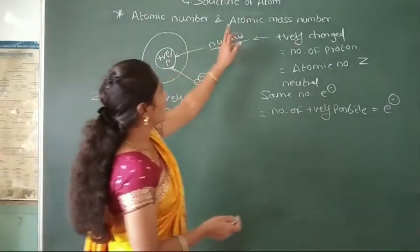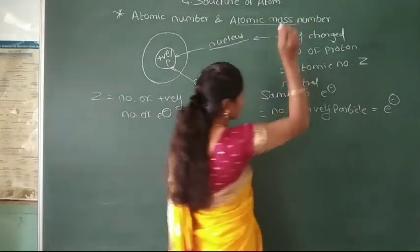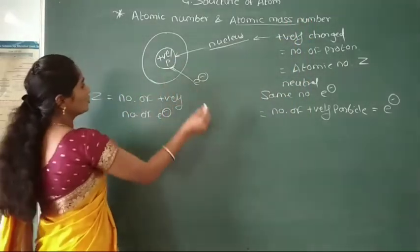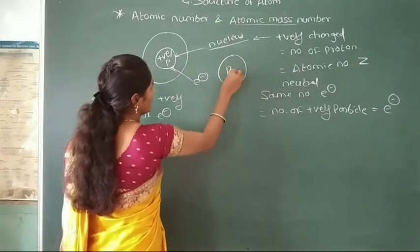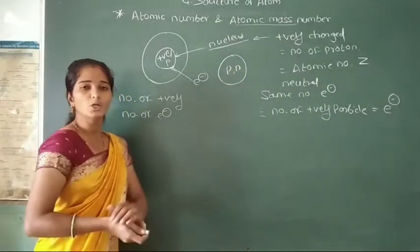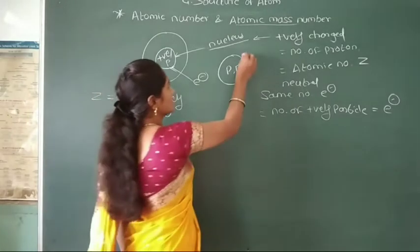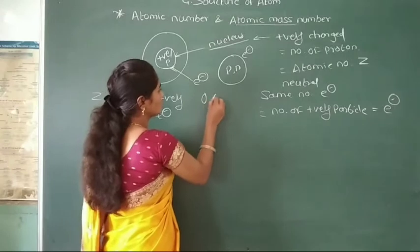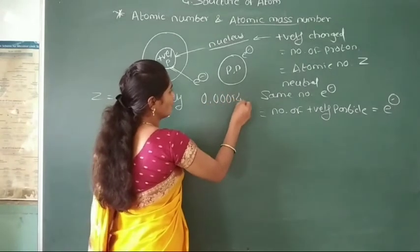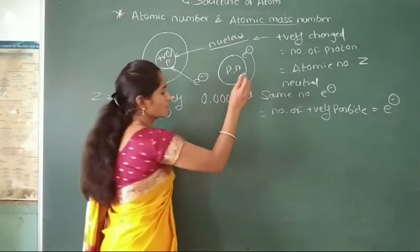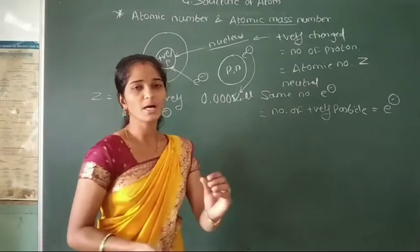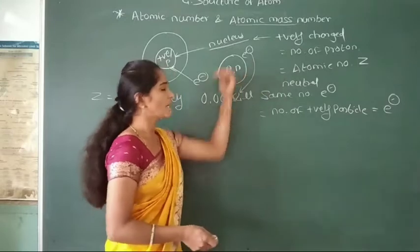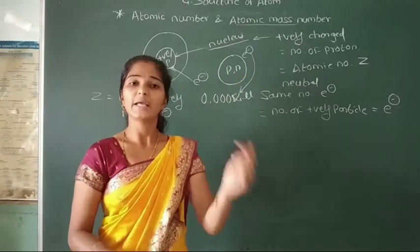Now we look at atomic mass number. In the nucleus, protons and neutrons are present. Electrons surround the nucleus, but the mass of an electron is 0.0054 mu, which is very small — so the mass of electrons in an atom is negligible and can be ignored.